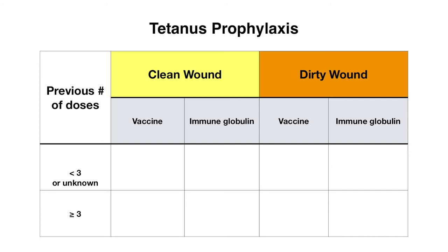For a patient presenting with a clean wound: if they received less than three vaccines, or it's unknown how many they received, they would receive the tetanus toxoid vaccine at that visit. If they received at least three vaccines in the past, they would receive the vaccine only if the last vaccine was given 10 or more years ago. With any clean wound, patients will not receive immune globulin regardless of how many doses they received.